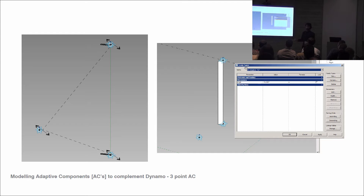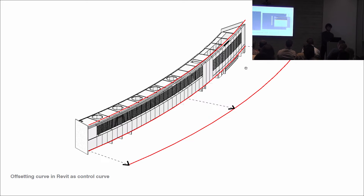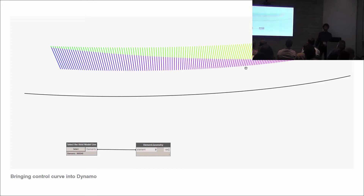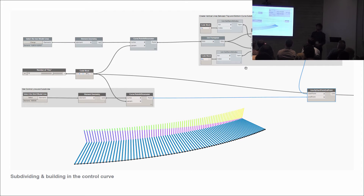We're happy with the adaptive component and work out how to place it using the Dynamo geometry we've made. Back in Revit, we get the project team to offset a curve as a notional control point and perform the same procedural subdivisions. We bring in the element geometry of that third model line and run the same kind of procedural subdivisions along it — still working with our number of fins and a start-end-step to subdivide this third line.